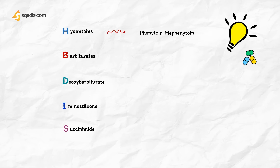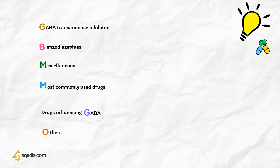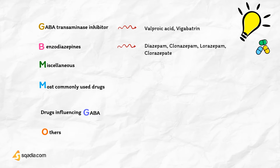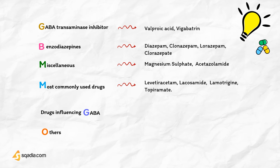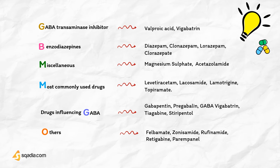Hydantoins include phenytoin and mephenytoin. Barbiturates include phenobarbitone and metharbitone. Deoxybarbiturates include primidone. Iminostilbene includes carbamazepine. Succinimides include ethosuximide. GABA-transaminase inhibitors include valproic acid and vigabatrin. Benzodiazepines include diazepam, clonazepam, lorazepam, and clorazepate. Miscellaneous include magnesium sulfate and acetazolamide. Most commonly used newer drugs are levetiracetam, lacosamide, eslicarbazepine, and topiramate. Drugs influencing GABA include gabapentin, pregabalin, vigabatrin, tiagabine, and stiripentol. Others include felbamate, zonisamide, rufinamide, retigabine, and perampanel.